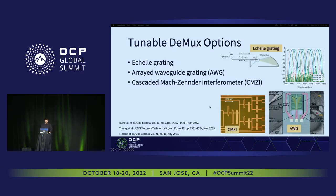For the rest of the talk I'll provide an example demux implementation. For tunable demuxes there are many technologies available. Three of the main ones are echelle gratings, AWGs, and cascaded MZIs, with various references showing implementations. Here I'm using cascaded MZIs as they offer low loss, are mature components used for decades in Mach-Zehnder configurations, and have a small footprint.